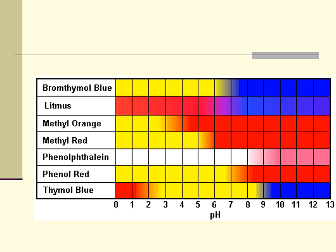Here are seven different indicators: bromothymol blue, litmus, methyl orange, methyl red, phenolphthalein, phenol red, and thymol blue. The colors they display range from yellow to blue in some cases, red to blue, and white to pink. Thymol blue actually has a double transition interval — way down toward zero on the pH scale it shows a red color, then up in the basic range around nine and above you get blue, with a neutral color in between. The transition interval is simply what you see when these indicators have their color change.